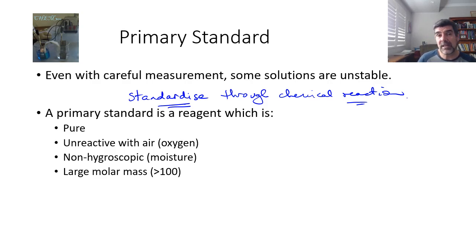For a substance to be a primary standard, there's a couple of important characteristics that it should have. It should be pure or at least as high purity as possible. It should be unreactive with the air, specifically oxygen in the air. Any interaction with the air that causes some sort of a chemical change to occur is going to interfere with the concentration of our solution. That's not what we want.